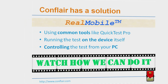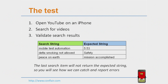Next, you will see a short demonstration of how our method works. For this demo, we have automated a YouTube test. Using our method and QuickTest Professional, the automated script will open YouTube on an iPhone — a real iPhone — search for selected videos, and then validate search results. All the test data, the search strings, and the expected results are stored in an Excel file.